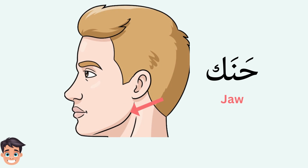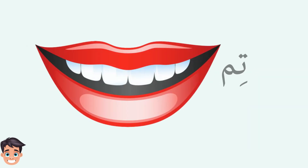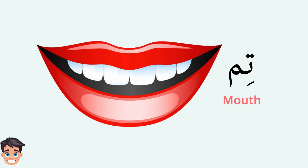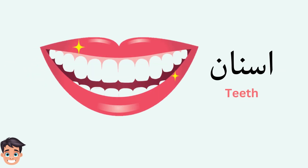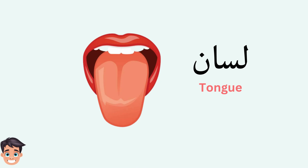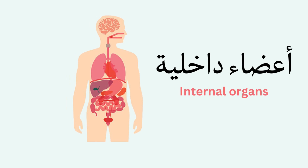حنك (chin), ذقن (jaw), فم (mouth), شفايف (lips), أسنان (teeth), لسان (tongue). Internal organs in Arabic means أعضاء داخلية. Let's start.